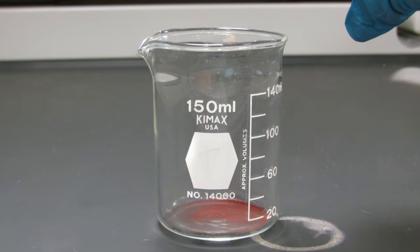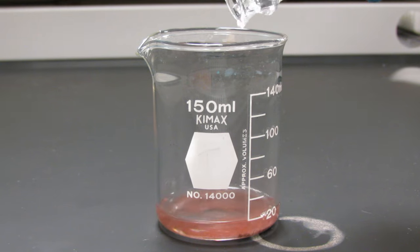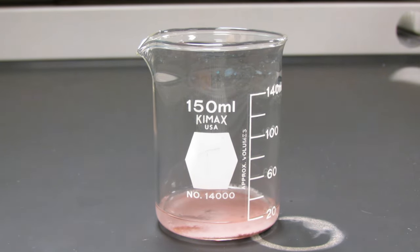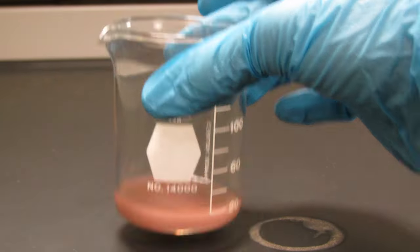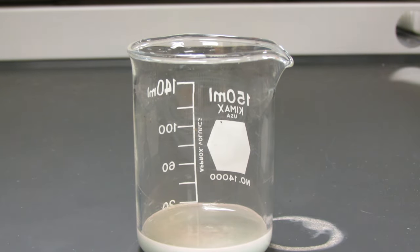Now add 10 milliliters of 6 molar nitric acid. This clip is sped up 4 times, and it takes a little bit for the copper metal to start reacting, but pretty soon the nitrogen dioxide gas begins to form as you can see.